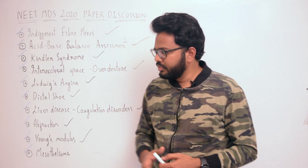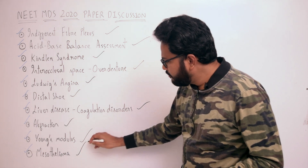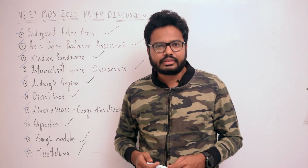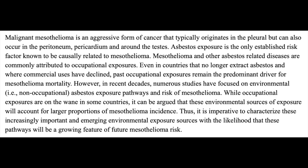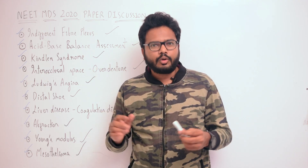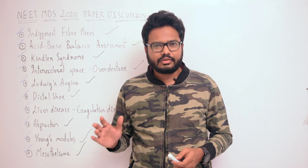The final topic: mesothelioma is associated with inhalation of asbestos. Malignant mesothelioma is an aggressive form of cancer that typically originates in the pleura but can also occur in the peritoneum, pericardium, and around the testes. Asbestos exposure is the only established risk factor known to be causally related to mesothelioma.